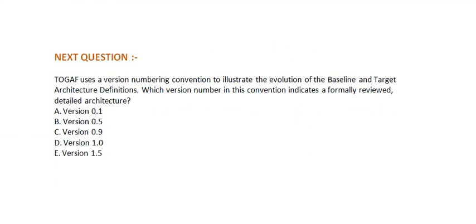Today's question: TOGAF uses a version numbering convention to illustrate the evaluation of the baseline and target architecture definitions. Which version number in this convention indicates a formally reviewed detailed architecture? Option A, version 0.1. Option B, version 0.5. Option C, version 0.9. Option D, version 1.0. And option E, version 1.5.